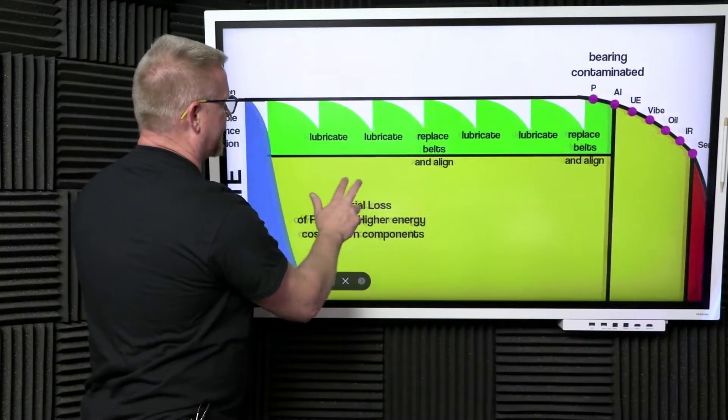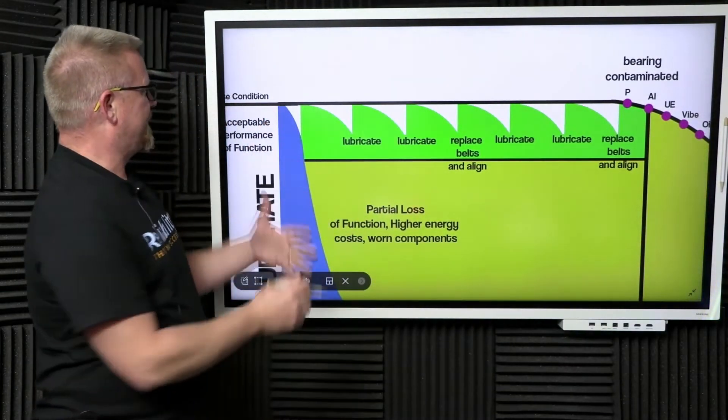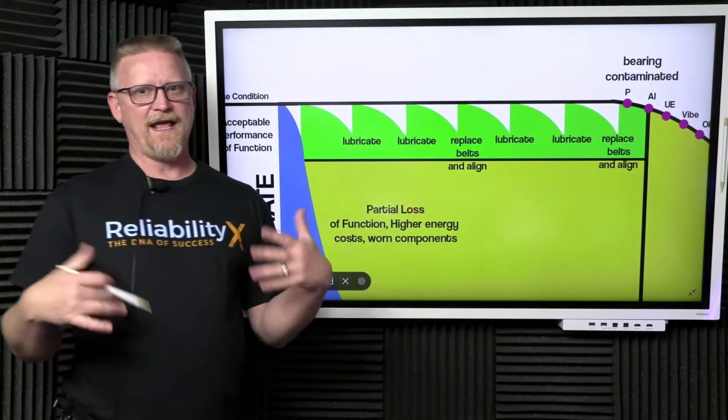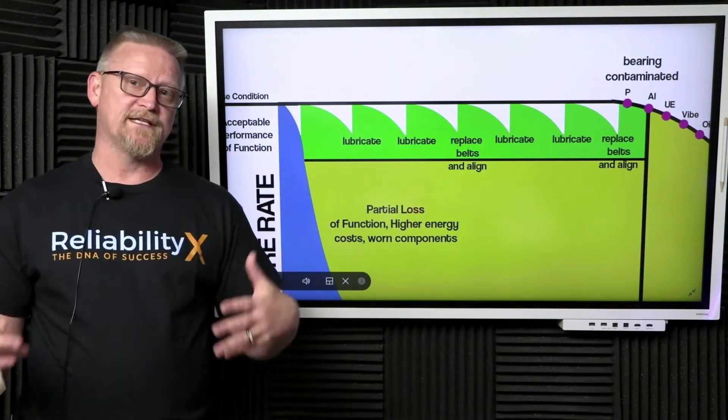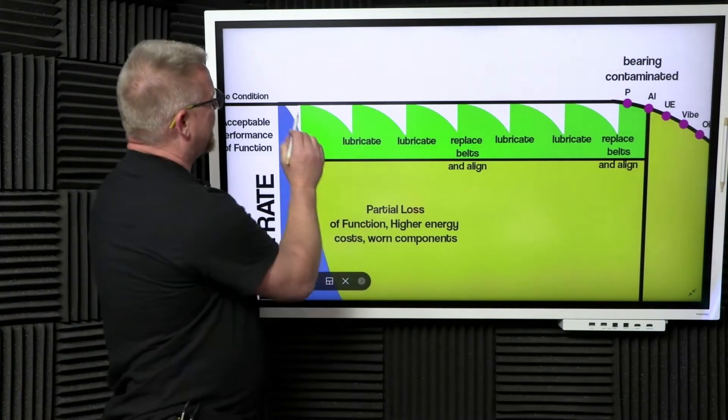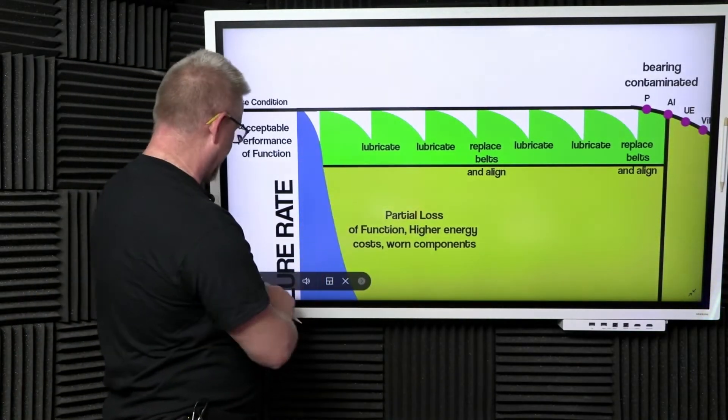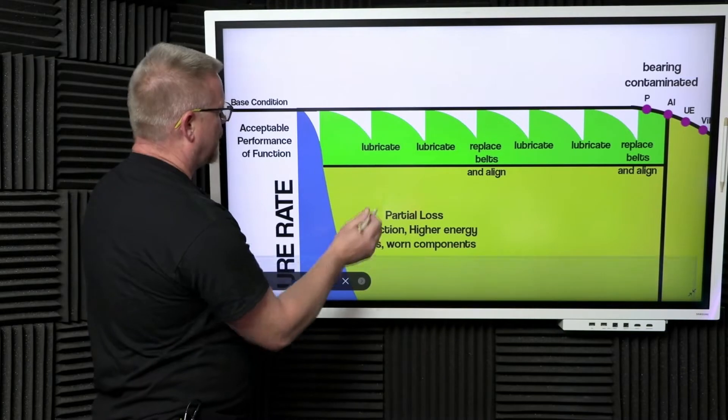If we zoom in, we've got the intended function of the asset and its base condition. The reason we have preventive maintenance is to restore things back to their base condition. Our lubricant begins to deteriorate, we lubricate and restore to base condition.